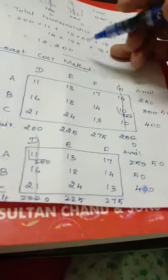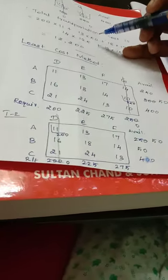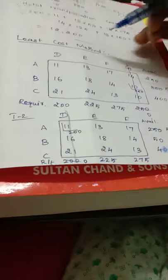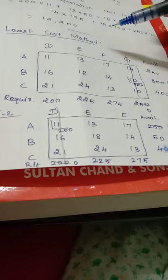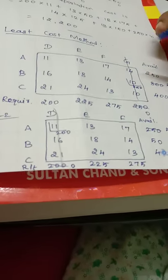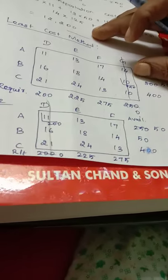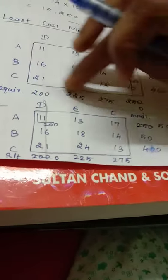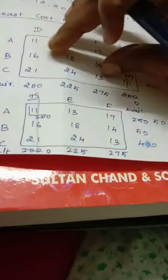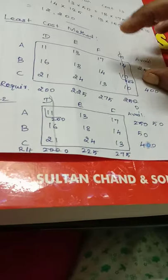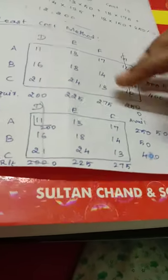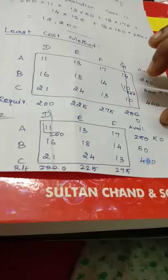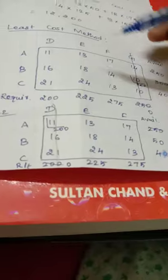Now we are moving to one more method, known as the least cost method. For the same problem I am going to find the least cost method value. In the least cost method, among the cost values inside the matrix, we have to select the least cost. Our least cost is 10.